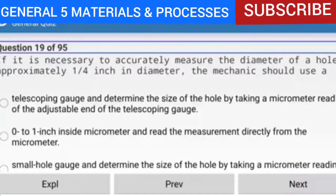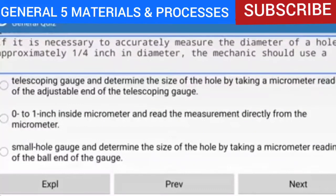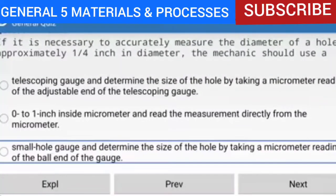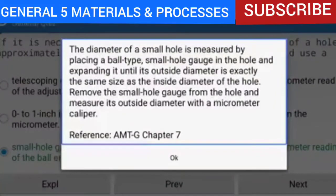Question 19 of 95: If it is necessary to accurately measure the diameter of a hole approximately one quarter inch in diameter, the mechanic should use a small hole gauge and determine the size by taking a micrometer reading of the ball end of the gauge. Place a ball-type small hole gauge in the hole and expand it until its outside diameter matches the inside diameter of the hole. Remove the gauge and measure its outside diameter with a micrometer caliper.